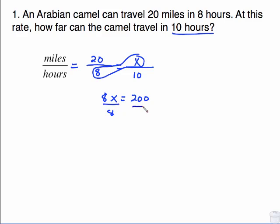Solve by dividing both sides by 8, and we get 25. And the unit that goes on that 25, because x was in the top, the unit is miles. So that camel can go 25 miles in 10 hours.